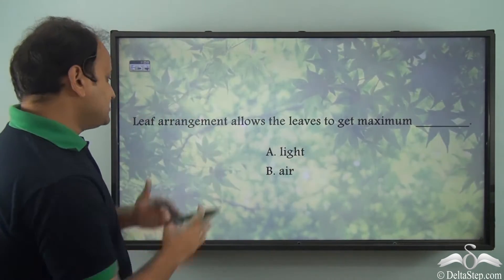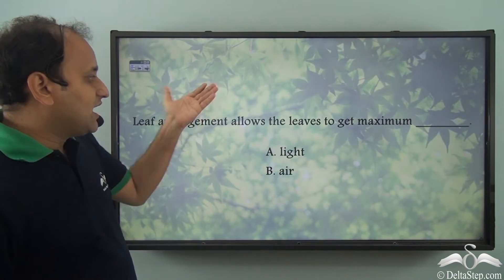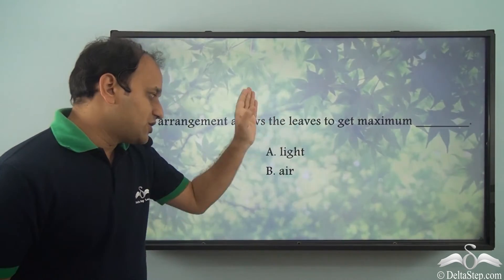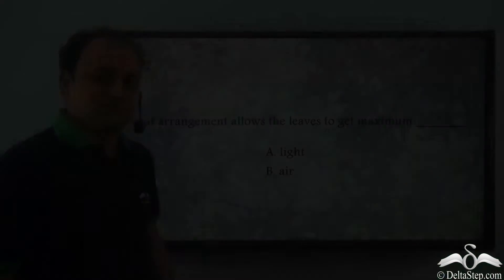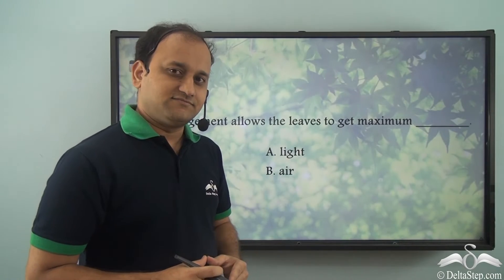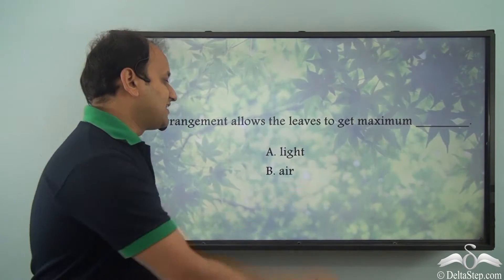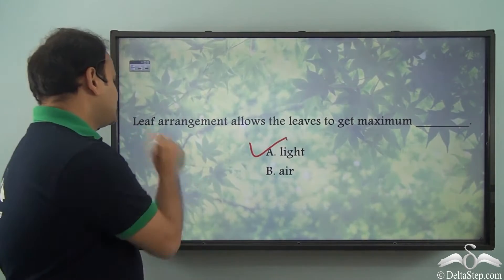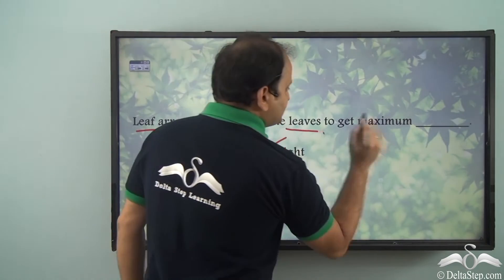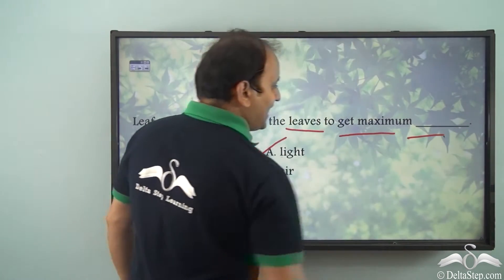Now can you answer this question? Leaf arrangement allows the leaves to get maximum light or air — what would be the correct answer? Well, the correct answer is light. So leaf arrangement allows the leaves to get maximum light.